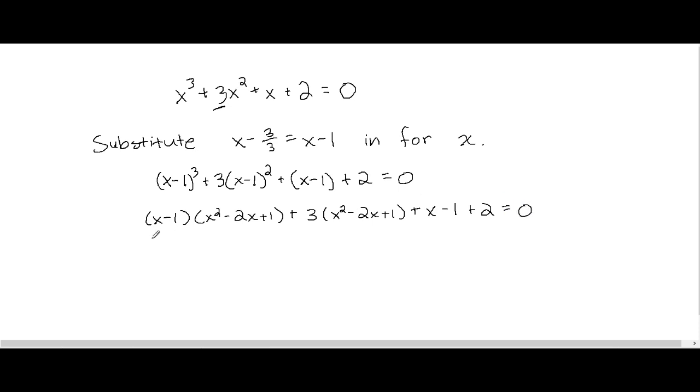And one more step of multiplying. So this last term will get really big. x to the third power minus 2x squared plus x minus x squared plus 2x minus 1 plus 3x squared minus 6x plus 3 plus x. And then negative 1 and 2, you can put those together and make it plus 1.